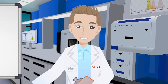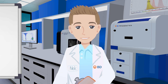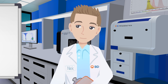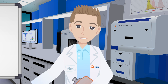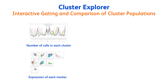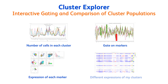Now I have my visualization and the different clusters. But how do I identify the phenotype of those cells efficiently and compare expression between experimental conditions? Thanks to the Cluster Explorer plugin, I am able to complete the phenotyping and comparison steps. Cluster Explorer, via a series of interactive panels, lets me look at the number of cells in each cluster, the expression of each marker for each cluster, gate on markers, and see the expression of my clusters between experimental conditions.